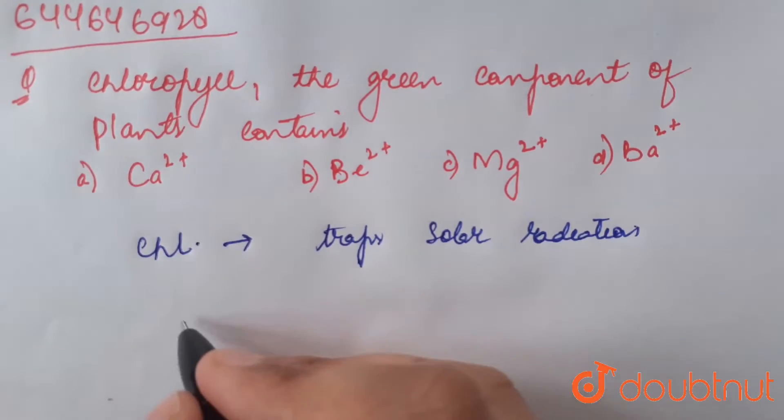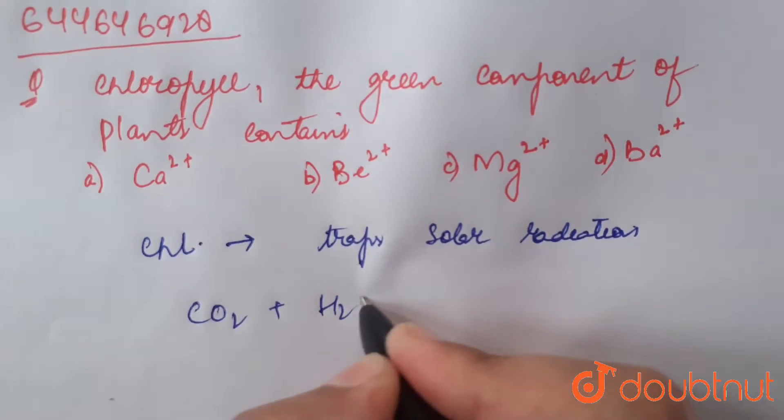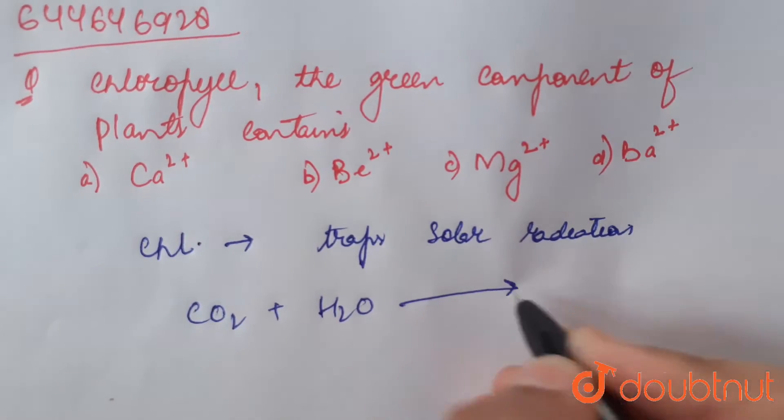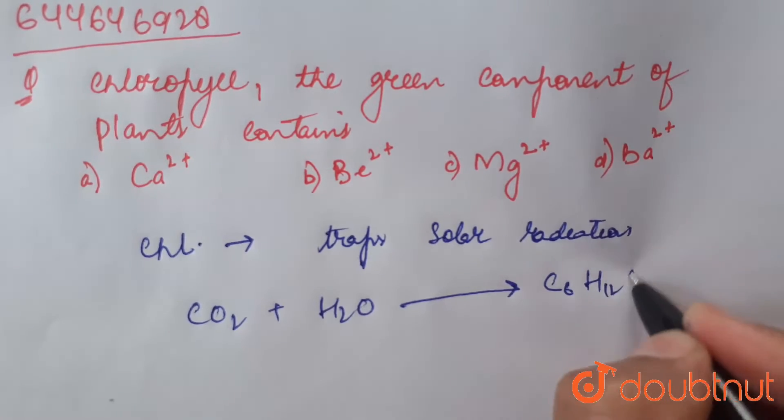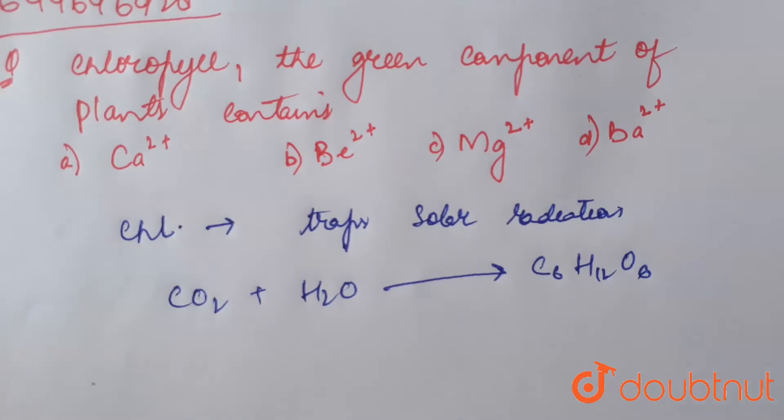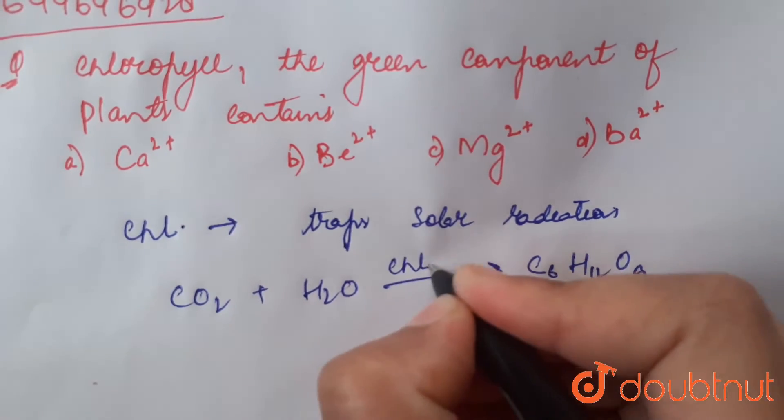And it converts inorganic components carbon dioxide and water to carbohydrates, organic component C6H12O6. All this happens in the chlorophyll molecule of plant in presence of sunlight.